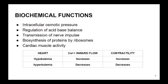Biochemical functions: potassium maintains intracellular osmotic pressure, regulation of acid-base balance, transmission of nerve impulse, and biosynthesis of proteins by ribosomes. Its most important function is on cardiac muscle activity. Calcium inward flow influences the contractility of the cardiac muscle — when the flow of calcium increases, contractility increases.